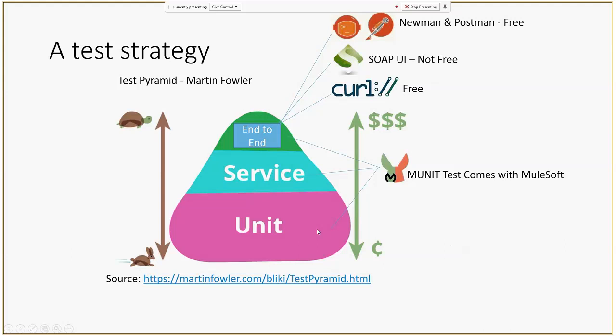You could also use MUnit to do unit testing. Most Mule components are built by Mule so we don't need to do unit testing unless we build our own components. For example, the Groovy components in our projects — because we have custom scripted them — we need to unit test them. You can use MUnit for those Groovy components, or use JUnit for custom Java classes.